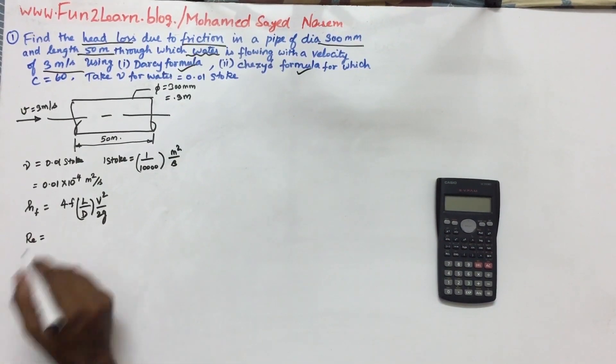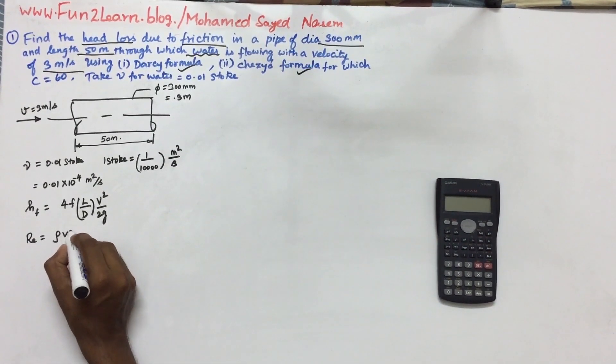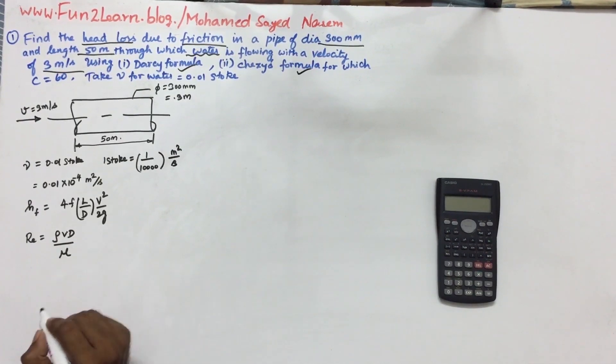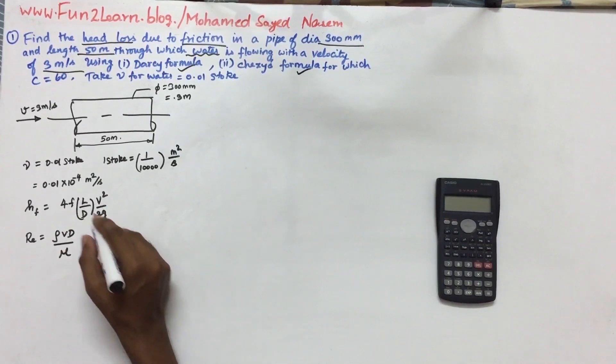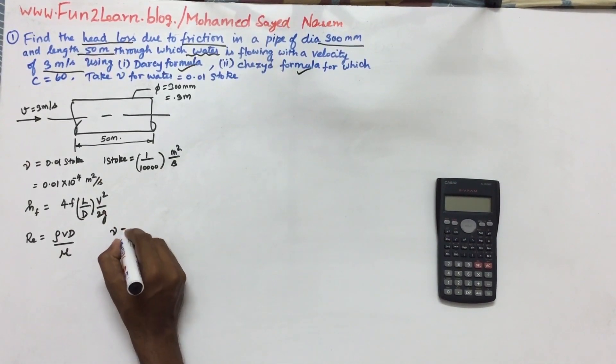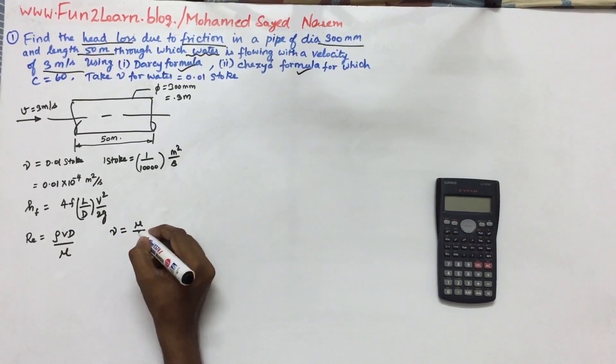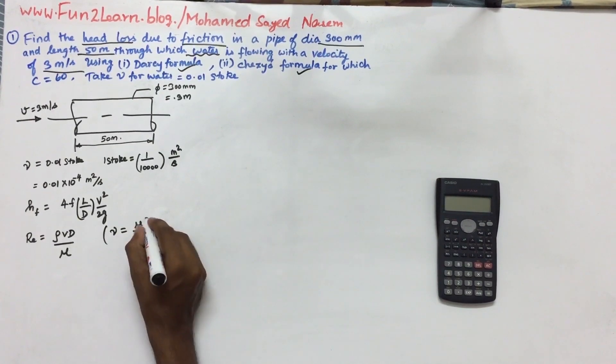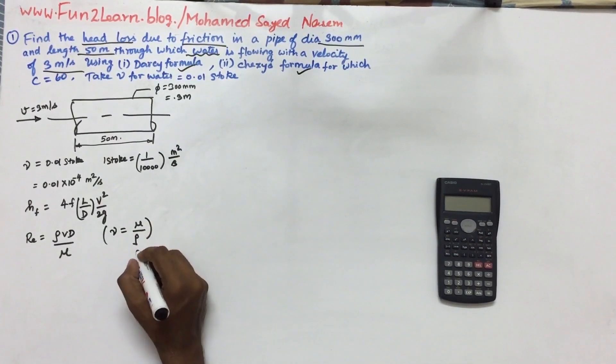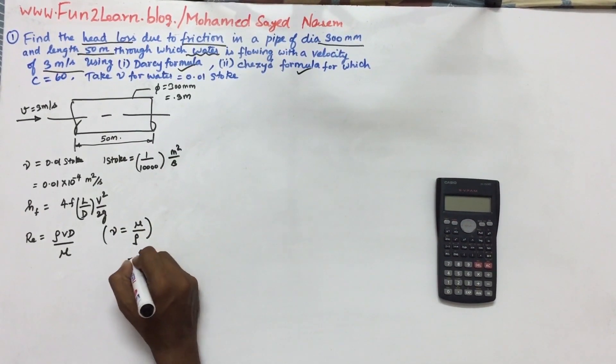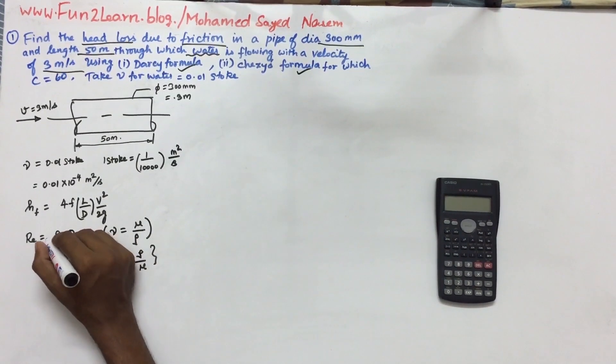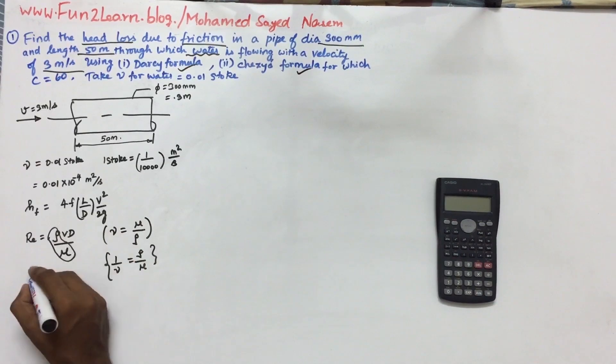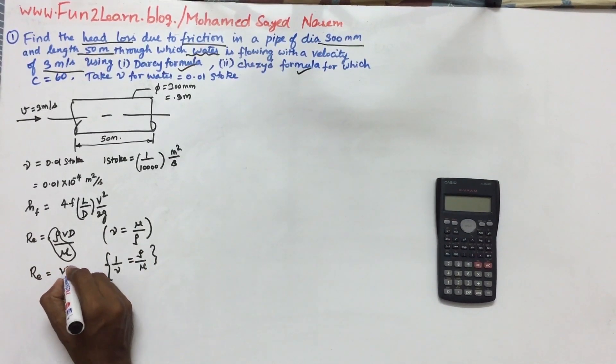First, what do we do? Reynolds number. Reynolds number formula is rho Vd by mu. We know new. New is equal to mu by rho. So rho by mu is equal to 1 by new. This is replaced, so Reynolds number equals Vd by new.